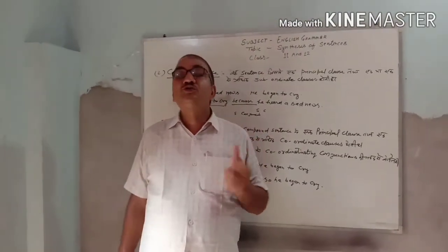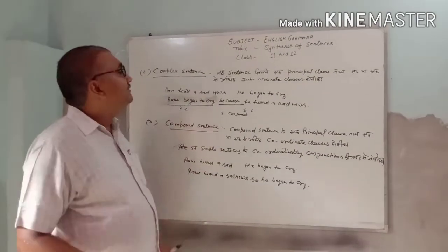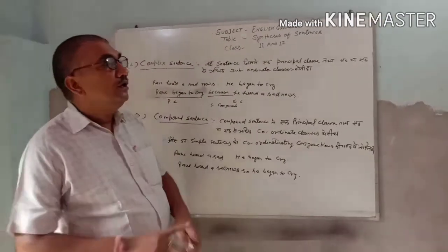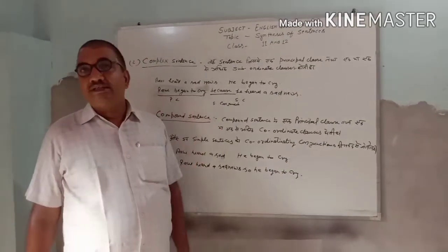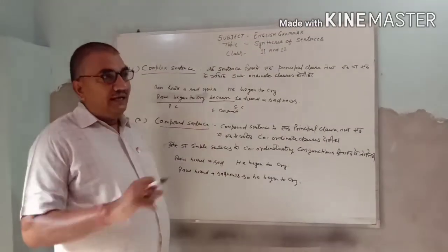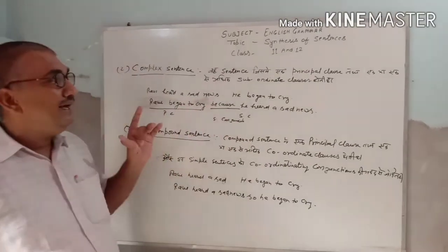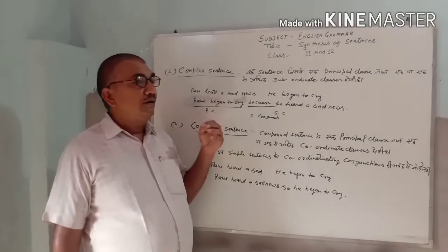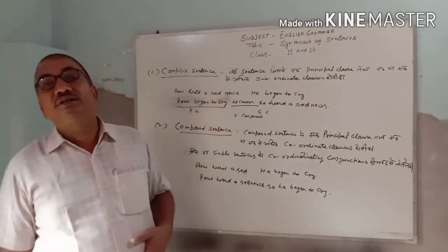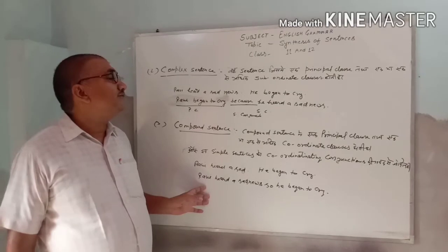So two or more simple sentences can make a new sentence, and this new sentence can be of three types: number one, a simple sentence; number two, a complex sentence; and number three, a compound sentence. By combining two or more simple sentences, we can make these three types of sentences.